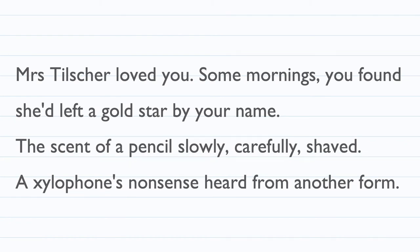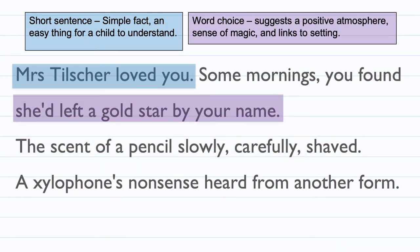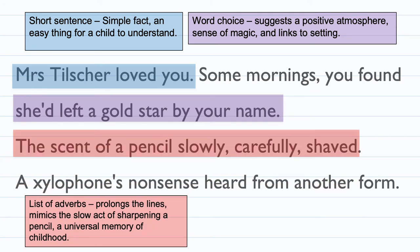The poetic speaker says: 'Mrs Tilscher loved you.' This is a short sentence — a very simple fact and an easy thing for children to understand. It's impactful and simple, emphasising the love the teacher has for her. The word choice of 'gold star' suggests a positive atmosphere; the sense of magic is still there and links to the classroom setting, with encouragement from the teacher. 'The scent of a pencil slowly, carefully shaved' is a list of adverbs — 'slowly' and 'carefully' prolong the line and mimic the slow act of sharpening a pencil, a universal memory that includes the reader further.